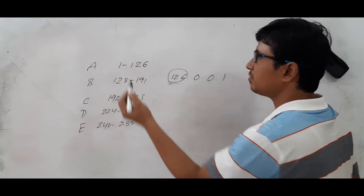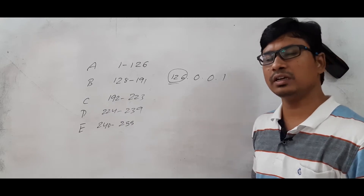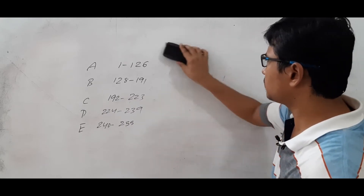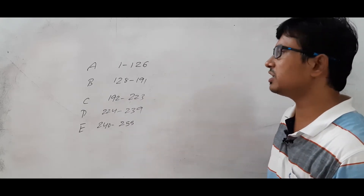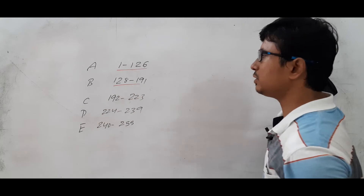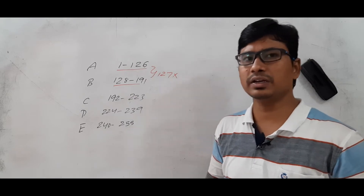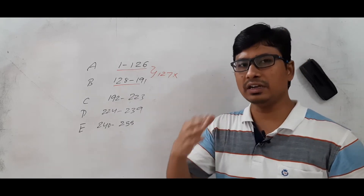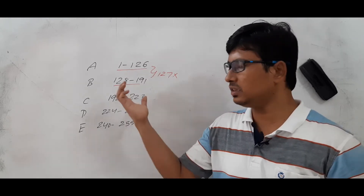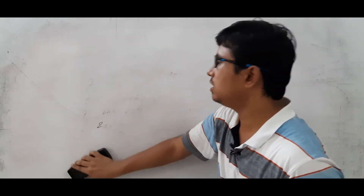If the address falls in the range of class A, then it is a class A network — 8 bits are for the network ID and 24 bits are for the host ID. Now, in these ranges we did not mention 127 anywhere, because 1 to 126 is class A and 128 to 191 is class B. So where is 127? I mentioned that I will discuss the 127 address separately because it is used for loopback addressing. In this video, I want to discuss loopback addressing using the range 127.